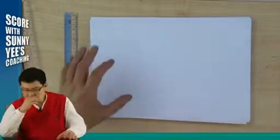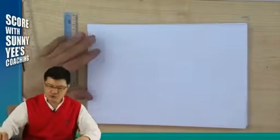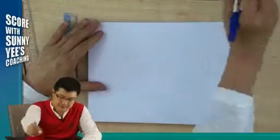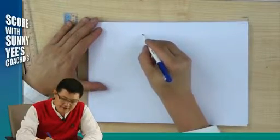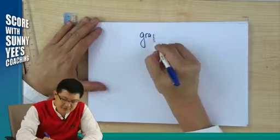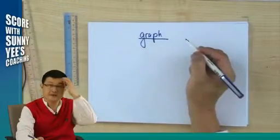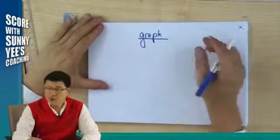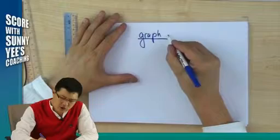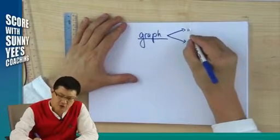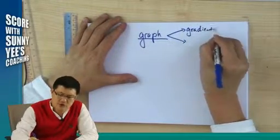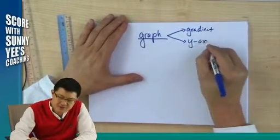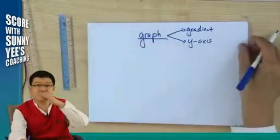Now, after we know the graph from the ticker tape, we come to graphs for motion. When you want to look at a graph, you always look at two components: number one, you always look at the gradient — what does the gradient represent — and number two, you always look at the y-axis and what value it represents.